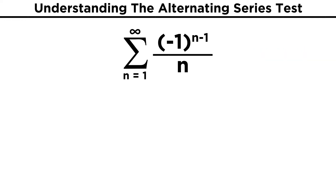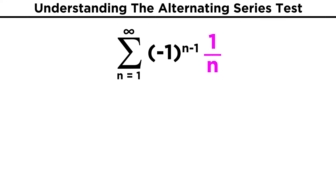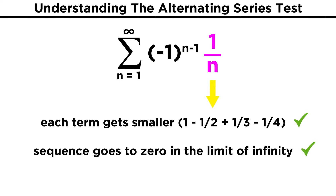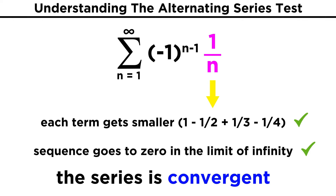So for example, with that first series we looked at, we can pull the term in the numerator to the side, and B sub n is therefore represented by one over n. Each term in this series is smaller than the previous, and in the limit of infinity, one over n goes to zero, so both criteria are met, and this is indeed a convergent series.